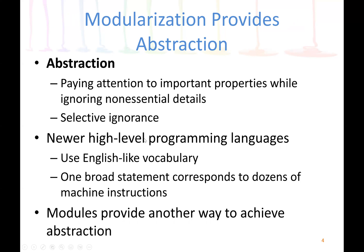The concept of abstraction means paying attention to important properties while ignoring non-essential details. This is also called selective ignorance. Newer high-level programming languages use abstraction a lot — for example, in Java and C++ we have abstract classes where we don't have to provide the detail of method implementations. English-like vocabulary is used and one broad statement can correspond to dozens of machine instructions. Modules also provide another way to achieve abstraction.